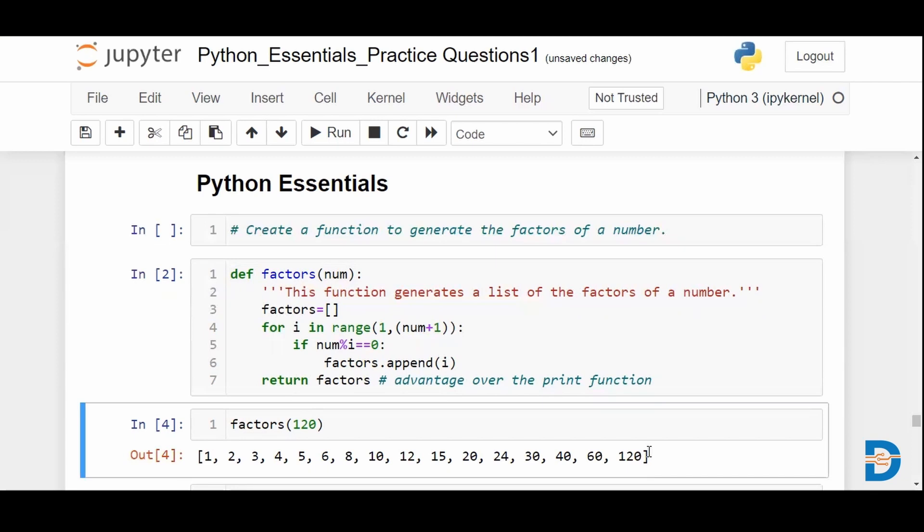There you go, right from 1 to 120 and all the numbers before that which perfectly divide 120 is what we have as the list of factors.